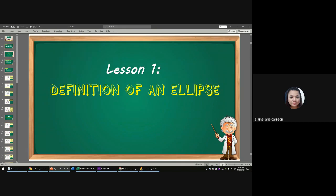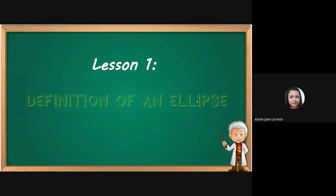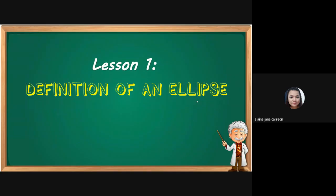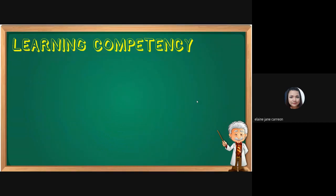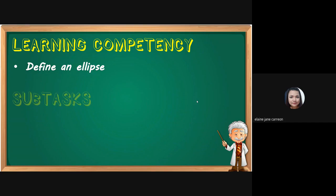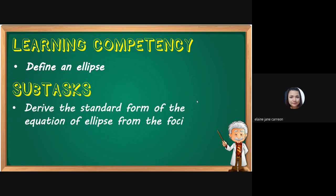Let's have first Lesson 1, the definition of an ellipse. This is quite long, so please bear with me. Our learning competency: at the end of this lesson, we're expected to define an ellipse. For your subtask, we have to derive the standard form of the equation of an ellipse from the foci.